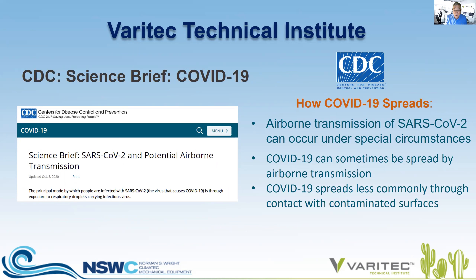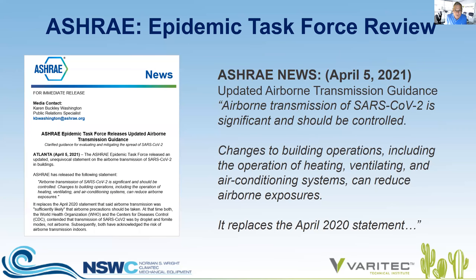COVID-19 spreads less commonly through contact with contaminated surfaces — that is new. There was an article in the New York Times just last week on how there's less concern about fomitic transmission of SARS-CoV-2. So there's still a little bit of conflict within CDC guidelines promoting full airborne aerosols as the primary means of transmission versus 'can sometimes be spread by airborne transmission.' However, ASHRAE has a more aggressive stance. They just released, as of April 5, 2021, a newsletter stating updated airborne transmission guidance.